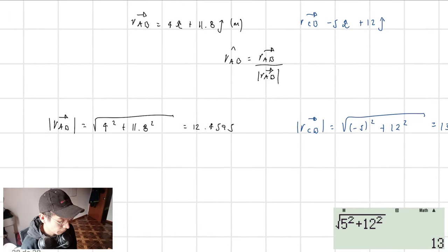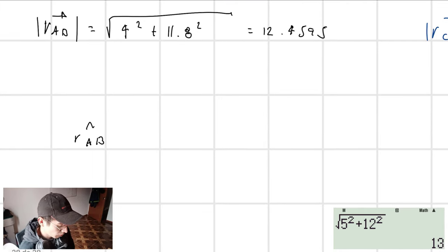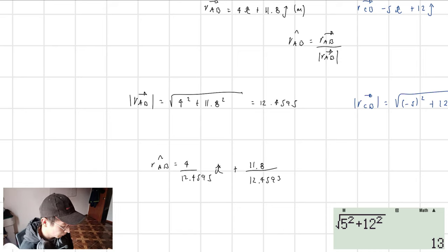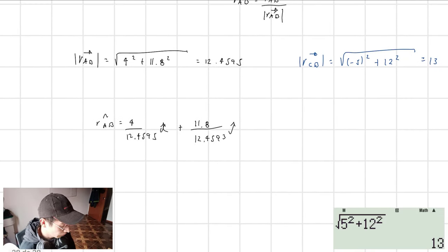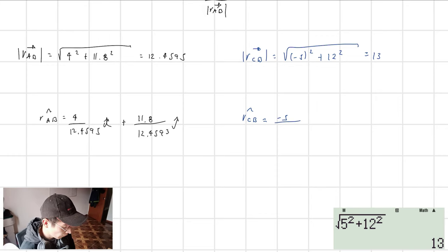The unit vector R_AB is going to be equal to 4 divided by 12.4595 along the i-direction, plus 11.8 divided by 12.4595 along the j-direction. The unit vector R_CB is equal to minus 5 divided by 13 along the i-direction, plus 12 divided by 13 along the j-direction.